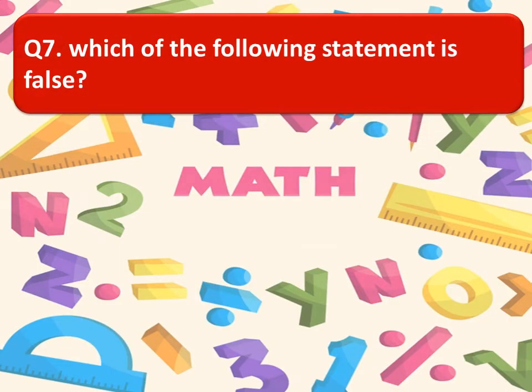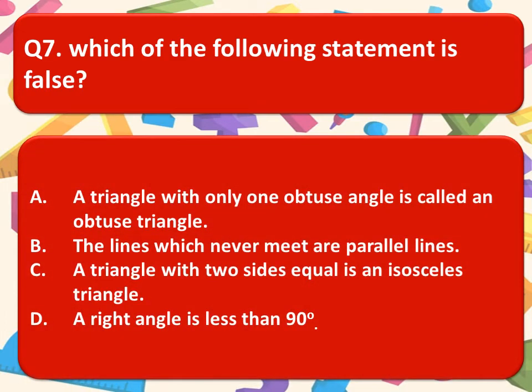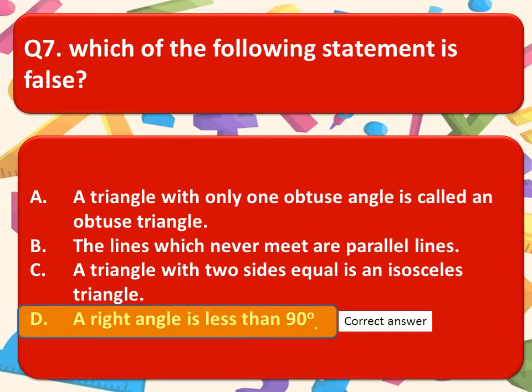The next one is which of the following statement is false? Option A. A triangle with only one obtuse angle is called an obtuse triangle. B. The lines which never meet are parallel lines. D. A triangle with two sides equal is an isosceles triangle or D. A right angle is less than 90 degree. Now, you have to choose the false statement. Option D. A right angle is less than 90 degree is the false statement.